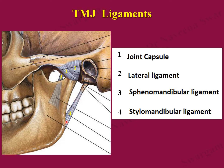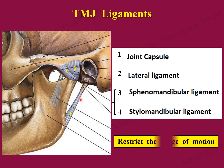The ligaments of the joint are four in number: the joint capsule, lateral ligament, sphenomandibular ligament, and stylomandibular ligament. The sphenomandibular and stylomandibular ligaments are considered accessory ligaments of the joint as they are separated from the joint by a considerable gap. Apart from supporting the joint, all the ligaments restrict the range of motion at the joint.